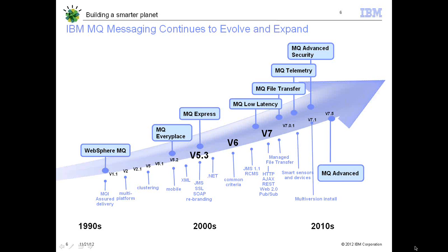So how did MQ evolve over the years? We started with MQ version 1.1 with assured delivery of point-to-point. Moving on to multi-platform support, we continuously expanded with features and products such as MQ Everyplace, MQ Express, low-latency messaging where throughput is most important, file transfer edition for transferring files using MQ, and MQ telemetric transport for pervasive or mobile messaging. The latest, MQ version 7.5, named MQ Advanced, provides MQ Advanced Message Security and MQ File Transfer Edition under one roof.